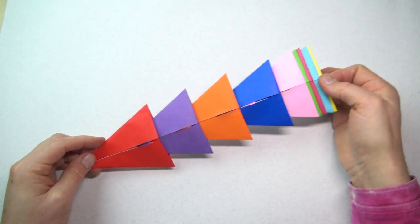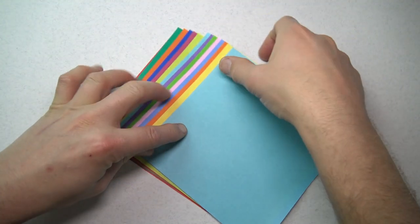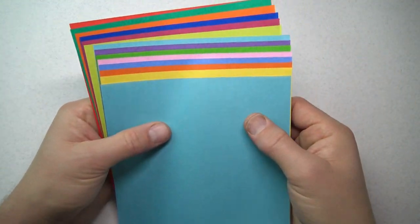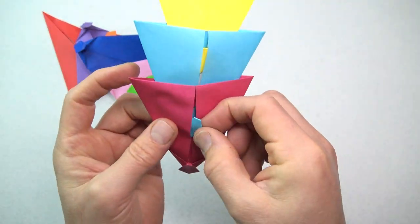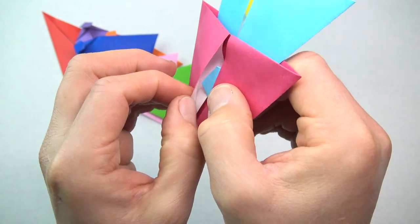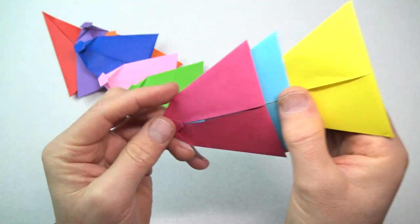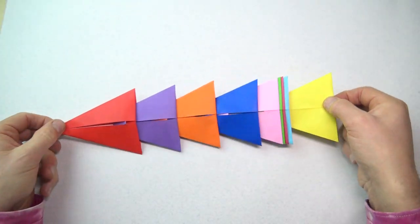Alright, so for this model you need a bunch of squares of paper. Printer paper cut square will work. Each square will get folded into a module and the modules will get connected to form the tail. So, the more squares, the longer the dragon tail.